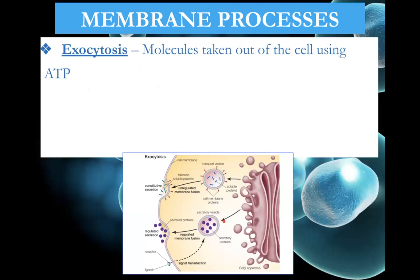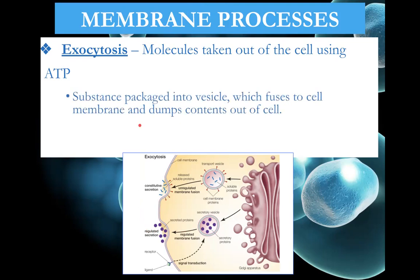Exocytosis is basically the opposite of endocytosis. The Golgi produces vesicles that we want to deposit proteins from to the outside of the cell. The vesicles travel to the membrane, bind to it, become part of the membrane, and dump their molecules on the outside of the cell. Proteins are released from the cell by this method.